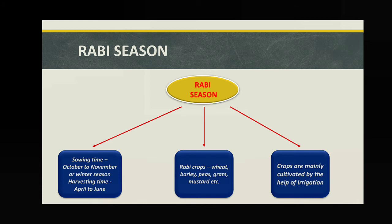Rabi season equals dry winter season. Dry means less rainfall and less humidity; winter means lower temperature. Crops that can grow in these conditions are called Rabi crops. The sowing time is mainly in October or November, and harvesting is in April or up to June, depending on the crop. Rabi crops include wheat, barley, peas, gram, and mustard — crops that require less temperature and less rainfall.